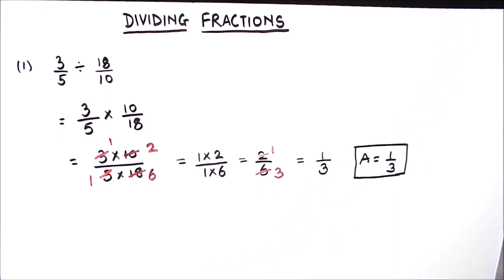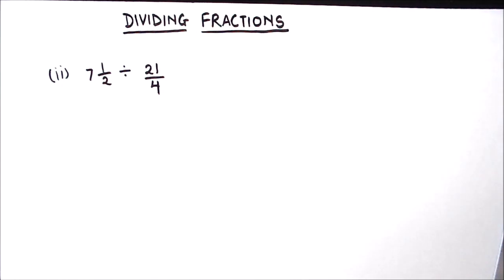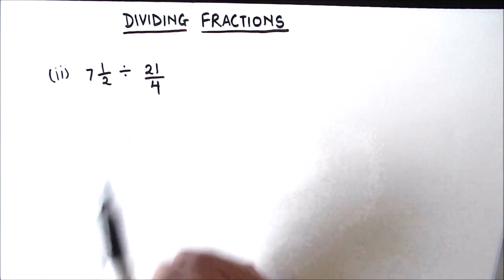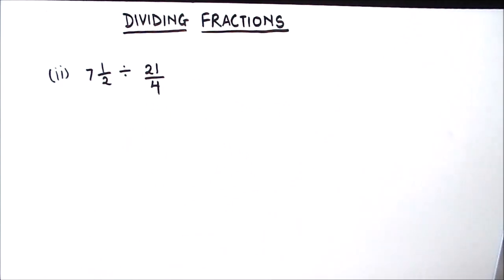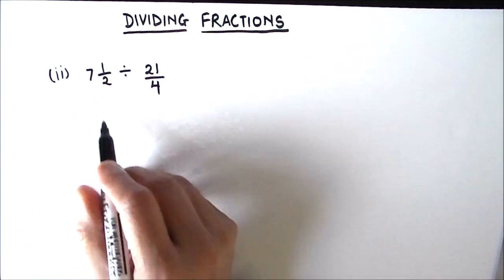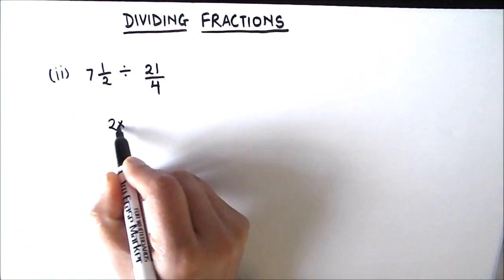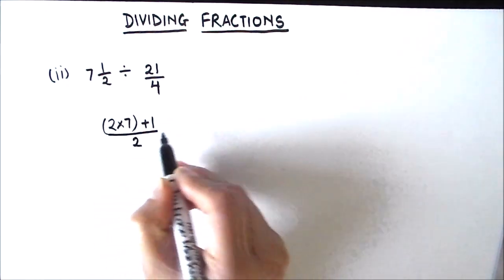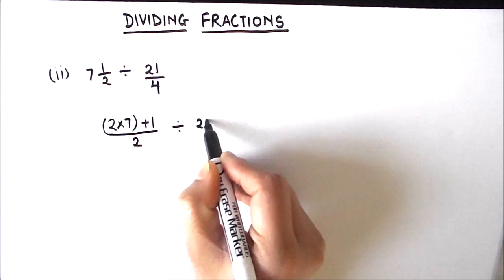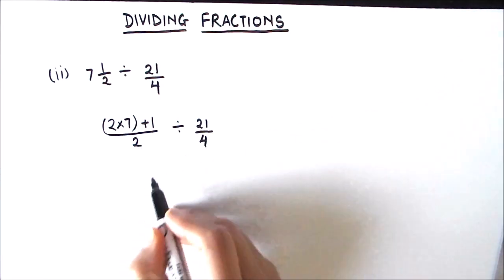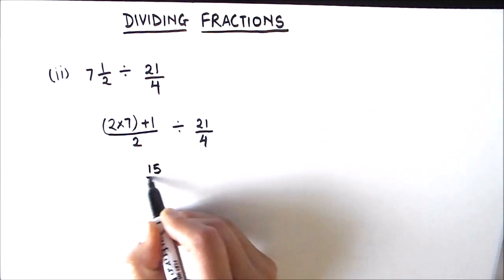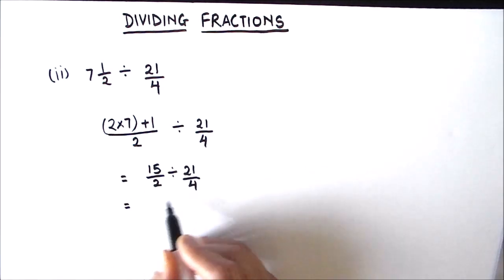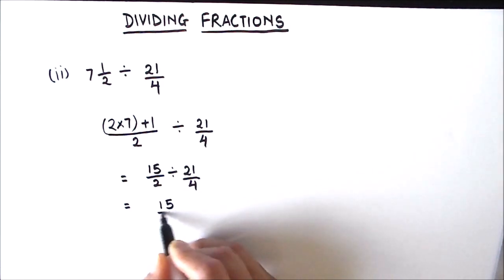Let's move on to our second example. We have a mixed fraction of 7 and 1 upon 2, divided by 21 upon 4. The first step is to convert the mixed fraction into an improper fraction. That's going to be 2 times 7 plus 1 over 2, divided by 21 upon 4. So now we have 15 upon 2.